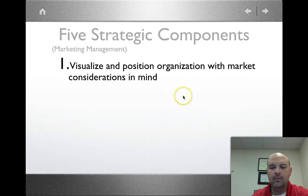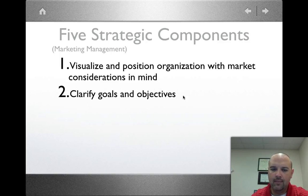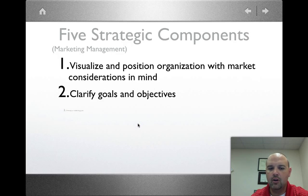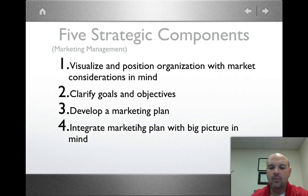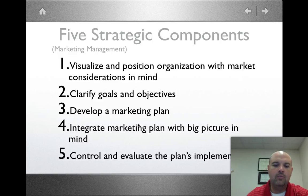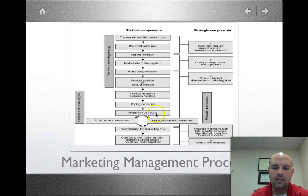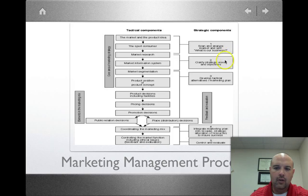The first strategic component is to visualize and position your organization with the market in mind — understand where your place is in the market you're going into, and understand what your goals and objectives are. You have to develop a marketing plan, put it in place with the overall goal of your company in mind, and then constantly evaluate it and be willing to change it. On the side are the five components, and things that go into them — like doing research, doing market segmentation, and understanding how your goals would change based on your market.